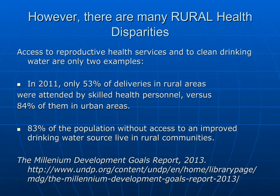Even though we are talking about population increases and urbanization, there are many rural health disparities. Merson cites many of these. For example, access to reproductive health services and to clean drinking water are only two examples. In 2011, only 53% of deliveries in rural areas were attended by skilled health personnel, versus 84% in urban areas. And 83% of the population without access to an improved drinking water source live in rural communities. These facts were taken from the Millennium Development Goals Report 2013, listed in the syllabus — an excellent resource.